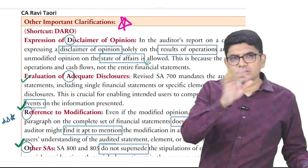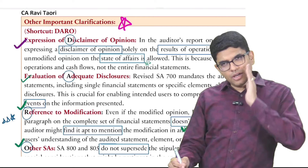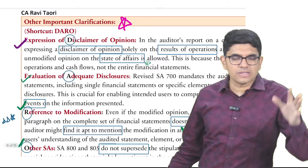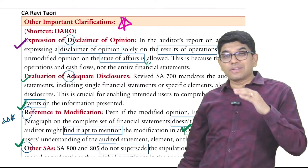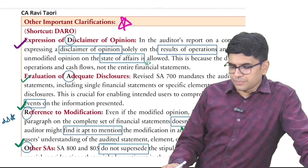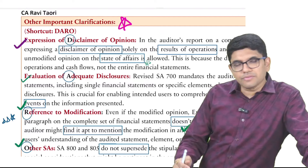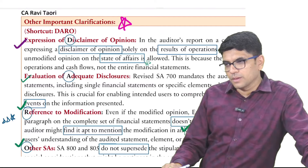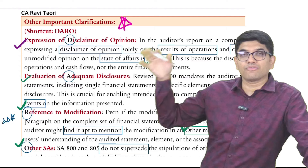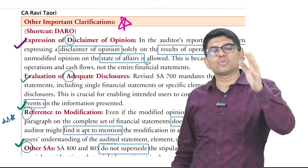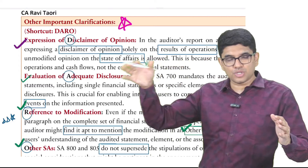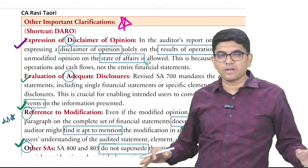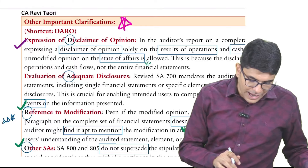Very interesting point — the DARO disclaimer point. If you are giving a disclaimer of opinion on results of operations — that is, on P&L — or a disclaimer on the cash flow statement, it is absolutely fine to give an unmodified opinion on state of affairs, that is, the balance sheet. This unique situation is possible: disclaimer on P&L and cash flow statement, but clean opinion on balance sheet, because you can see the assets and liabilities and you are very confident about financial position.